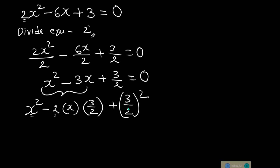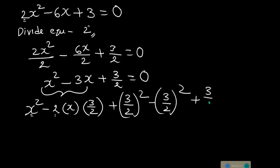Now we add the b squared term, which is (3/2) whole squared, to complete the square. Since we added it, we also subtract it so the equation doesn't change. The two (3/2) squared terms cancel, and with 2 and 2 cancelling, we get 3x. The 3 over 2 already present in our equation remains, equal to zero.